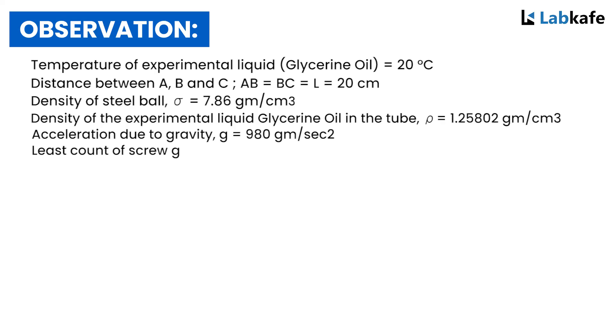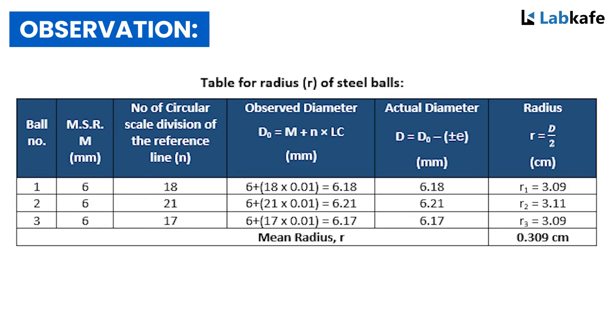The least count of the screw gauge is 0.01 millimeters. Check our previous video to see how to calculate the least count of the screw gauge. The mean radius of steel ball is 0.309 centimeters.